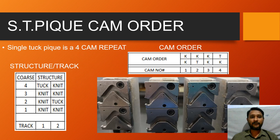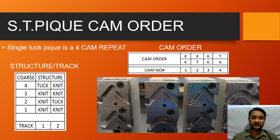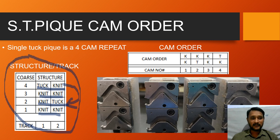Let us move on to cam order. Since single tuck PQ is a 4 course repeat, it obviously requires 4 cams to create that particular design. We have marked the 2 tracks: course number 1 knit-knit, course number 2 knit-tuck, course number 3 knit-knit, and course number 4 tuck-knit. To create this particular structure, this is the cam order we need to follow.